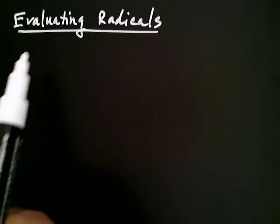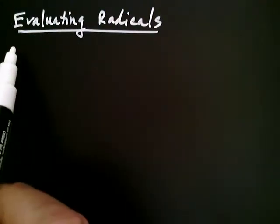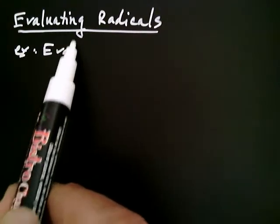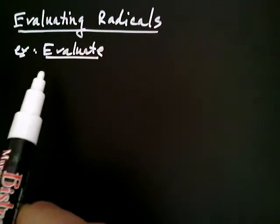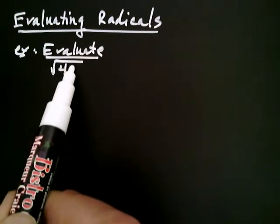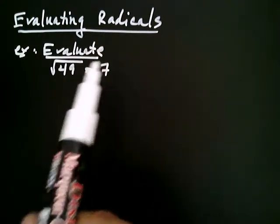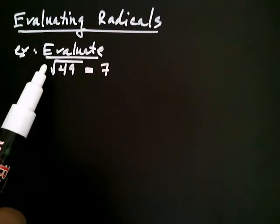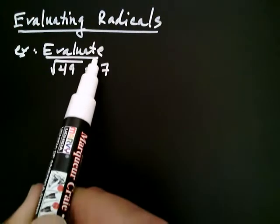Let's gain some practice evaluating radicals. If you're asked to evaluate the square root of 49, we know that's equal to seven. Remember that whenever you have the square root, or the fourth root, or the sixth root — any time the index is even — the answer is always positive. So in this case, positive seven.